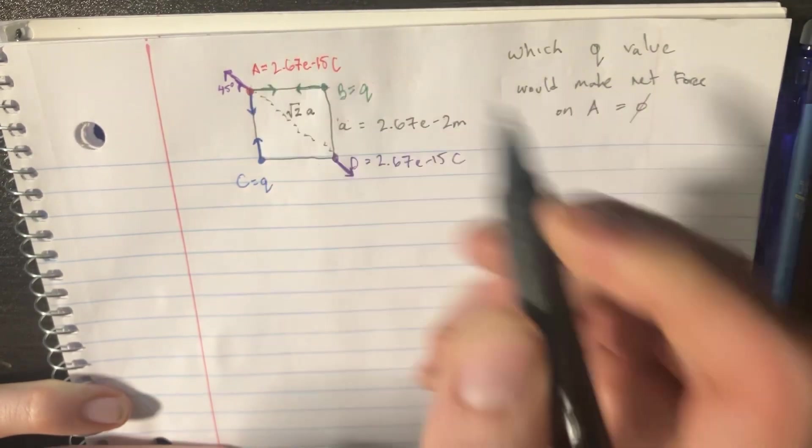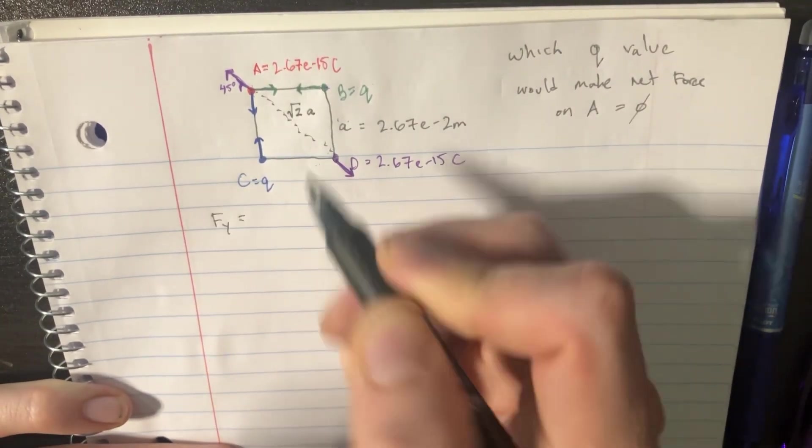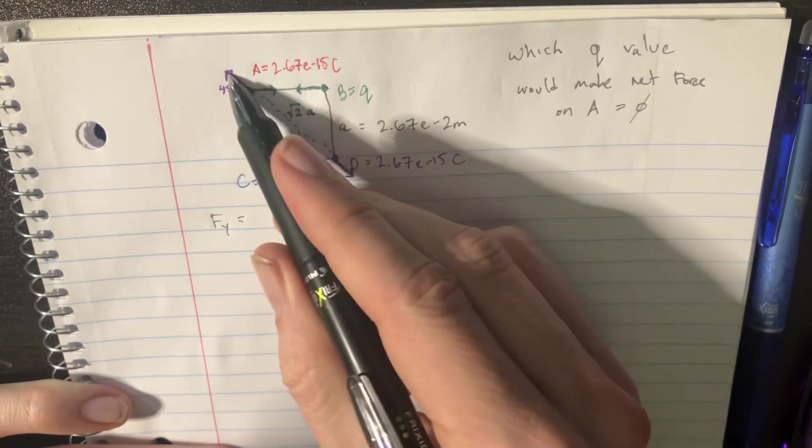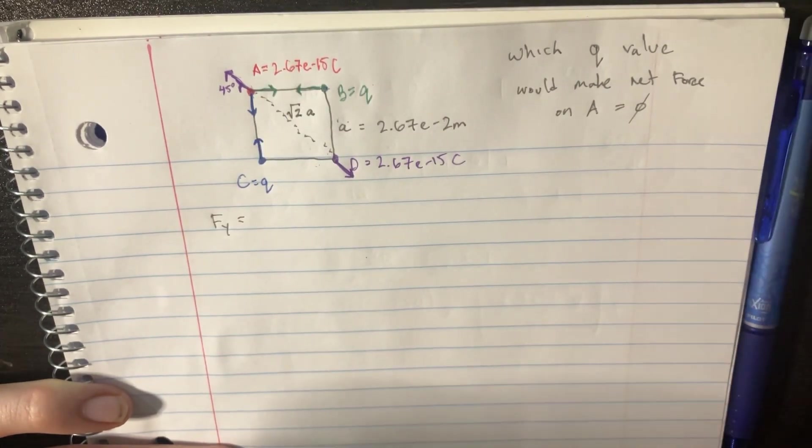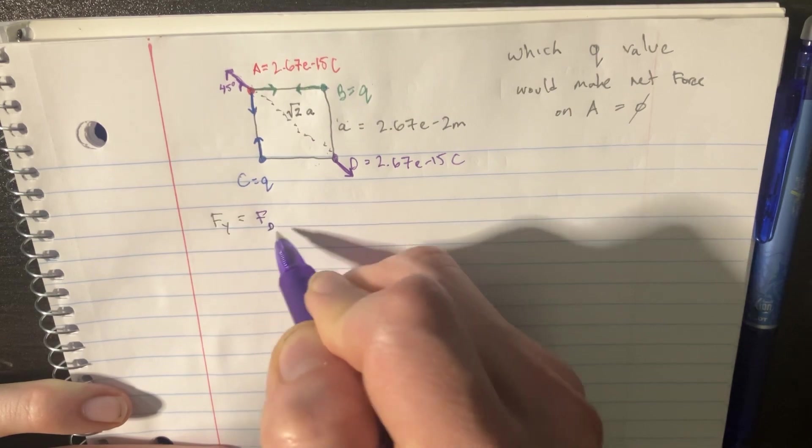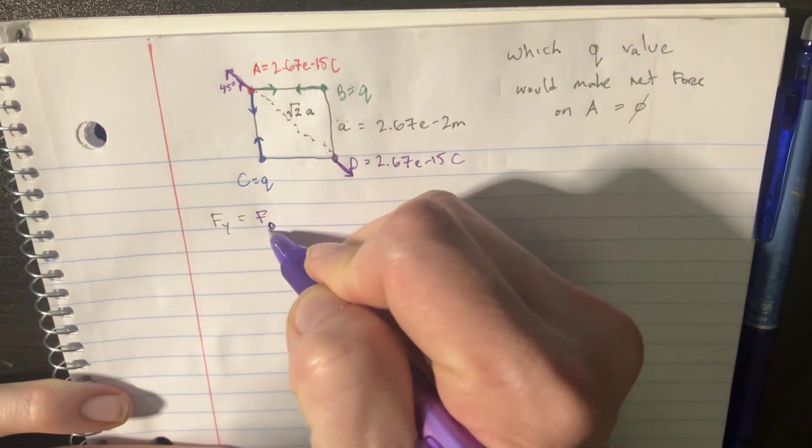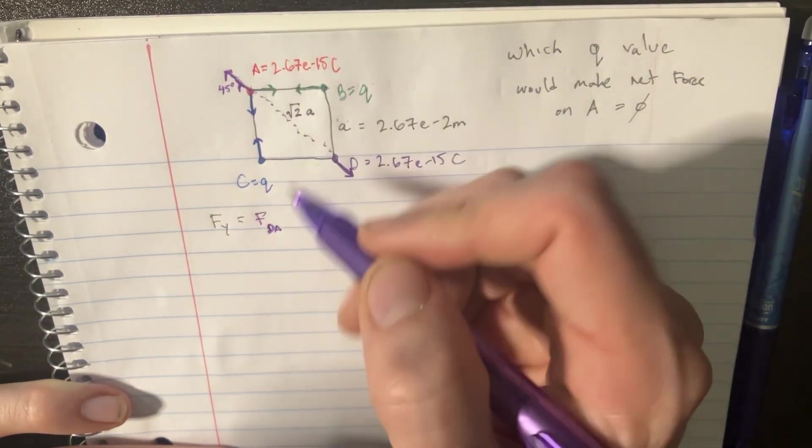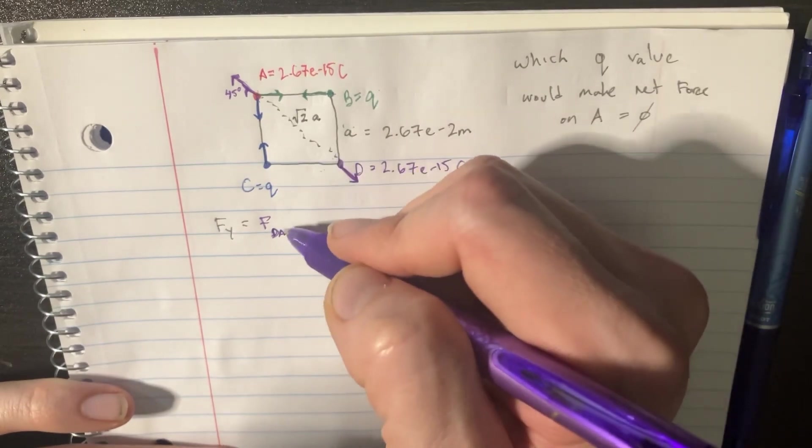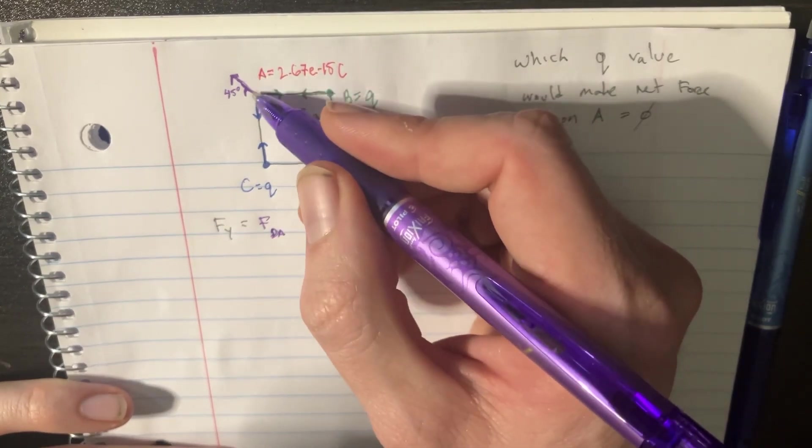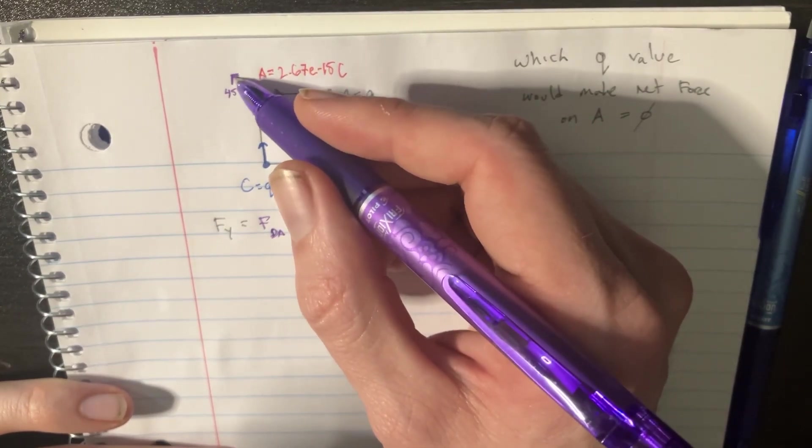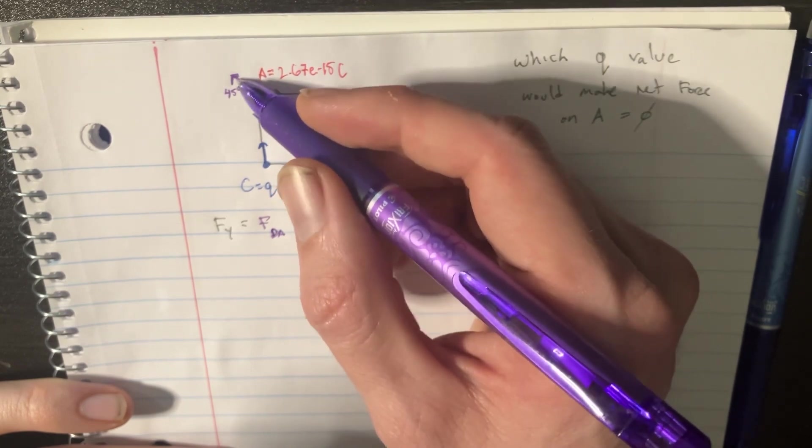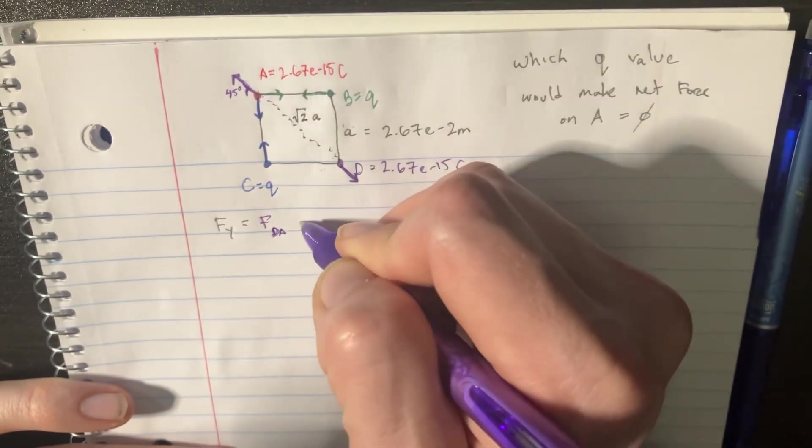Let's equalize the Fy. It's going to be forces in the Y direction. That's just going to be equal to this force, which is going to be force of D on A. And this is going to be sine of 45, right? So sine of 45.